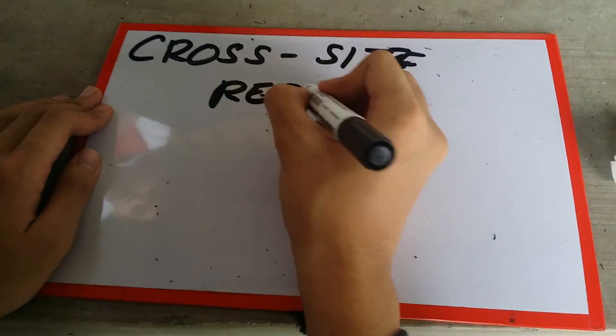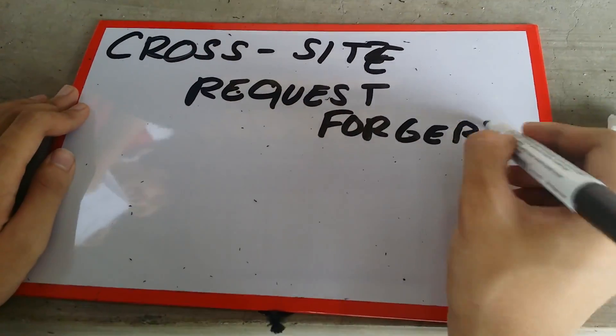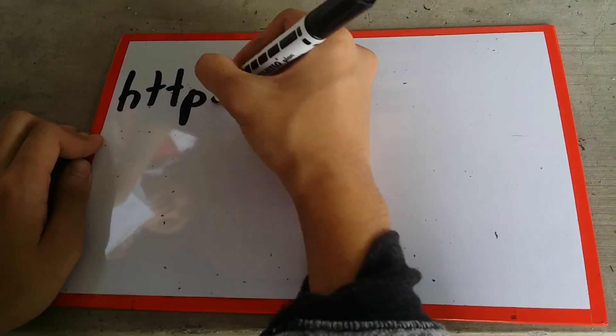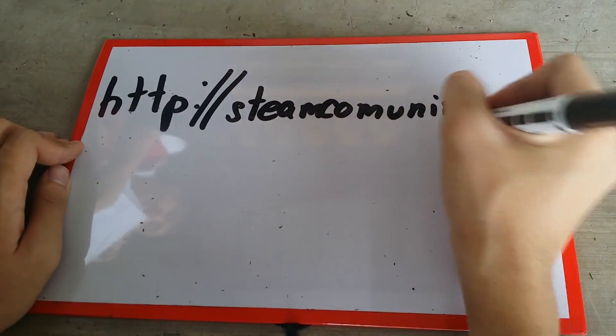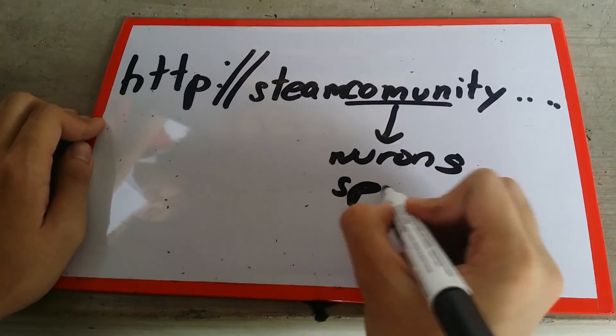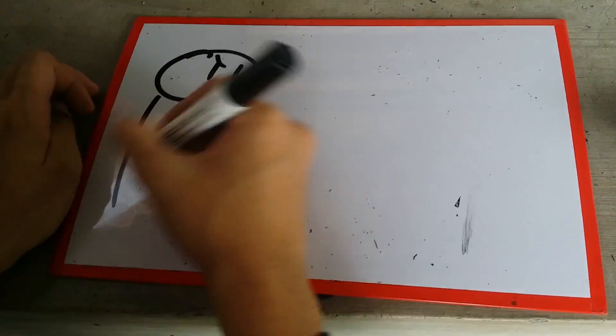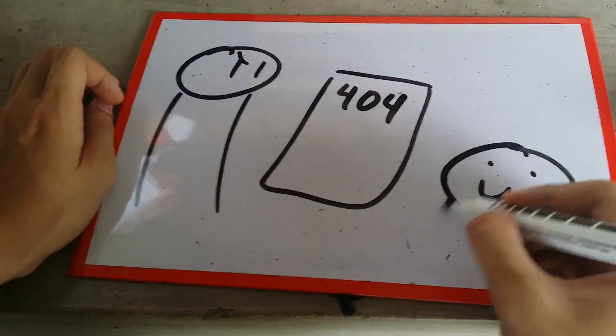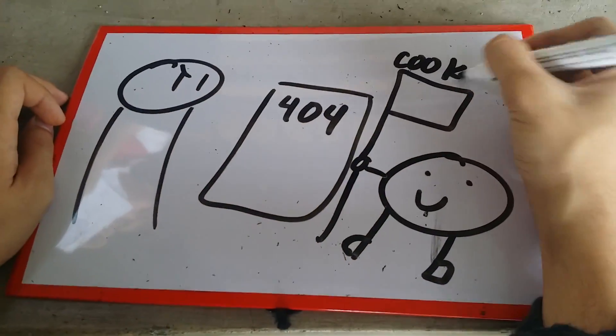Next are cross site request forgery attacks. It may sound simple, but they're not really. They're basically site requests where a hacker will send you a link where you think it'd be legit, like free Steam credits or coins or some other currency.